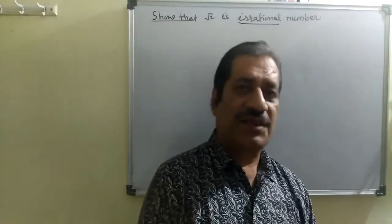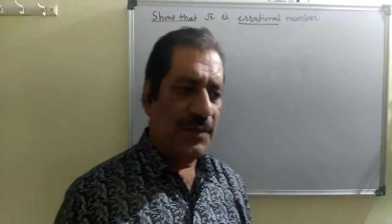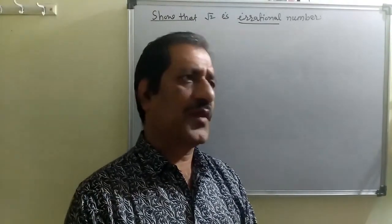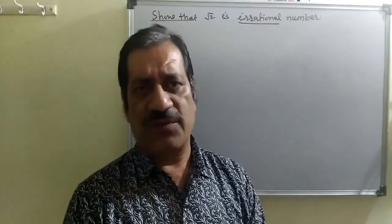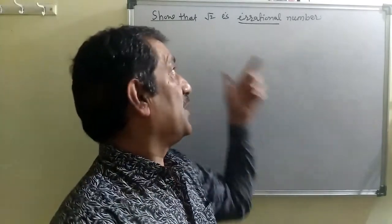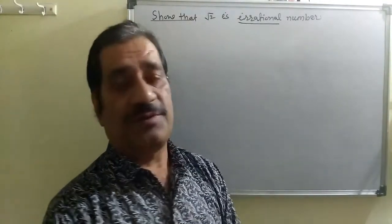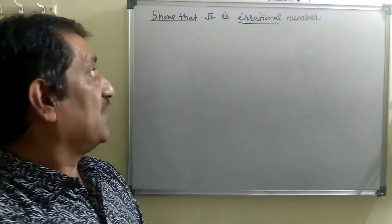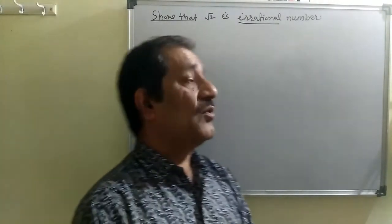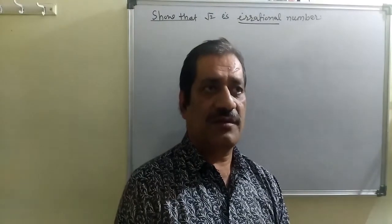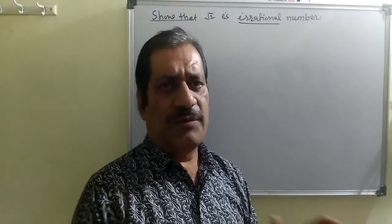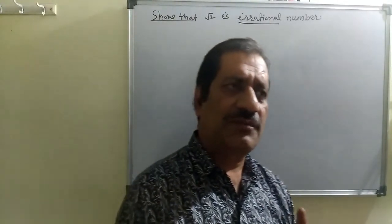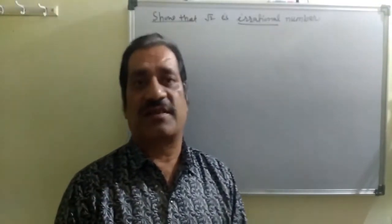Show that root 2 is an irrational number. We have seen practice set 2.1, now for 2.2 we discuss this proof. The statement of this proof is: show that root 2 is an irrational number. We will do this by the indirect method.